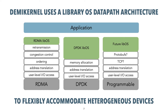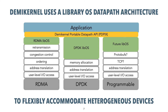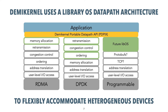DemiKernel proposes a library OS datapath architecture, where each LibOS supports one kernel bypass platform or device. The LibOSs implement the same API and OS services, but either in hardware or software. For example, the RDMA LibOS implements memory and I/O buffer management in software, but leaves reliable ordered networking to the hardware, while the DPDK LibOS implements those features in software.